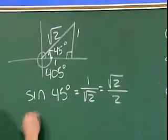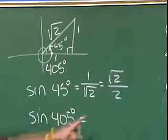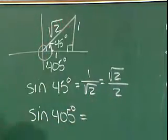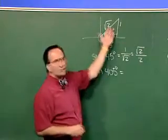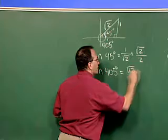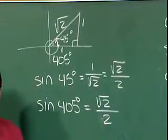But then the sine of 405 degrees would be the same as that with the appropriate sign. But we know that all of the trig functions are positive in quadrant one, so of course the sine of 405 is equal to the square root of two over two.